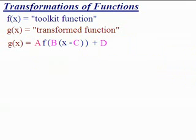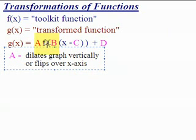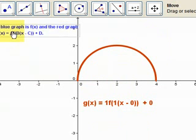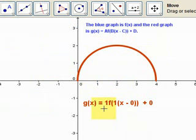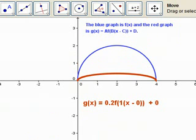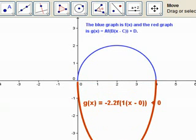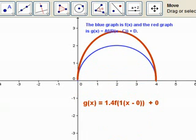The first parameter is the A value. The A value is a number that will dilate the graph vertically, flip it over the x-axis, or both. The blue graph is the toolkit. As I make the A value bigger, it stretches or shrinks the graph. When A is 0.2, the graph has been shrunk. When A is negative, it flips the graph over the x-axis and can also stretch it simultaneously.